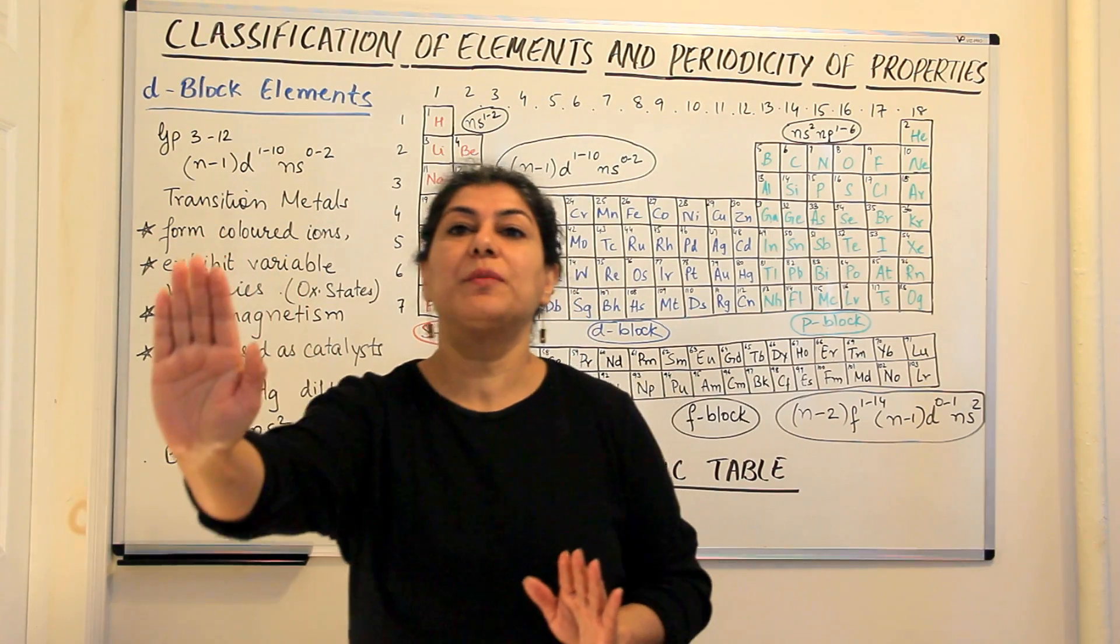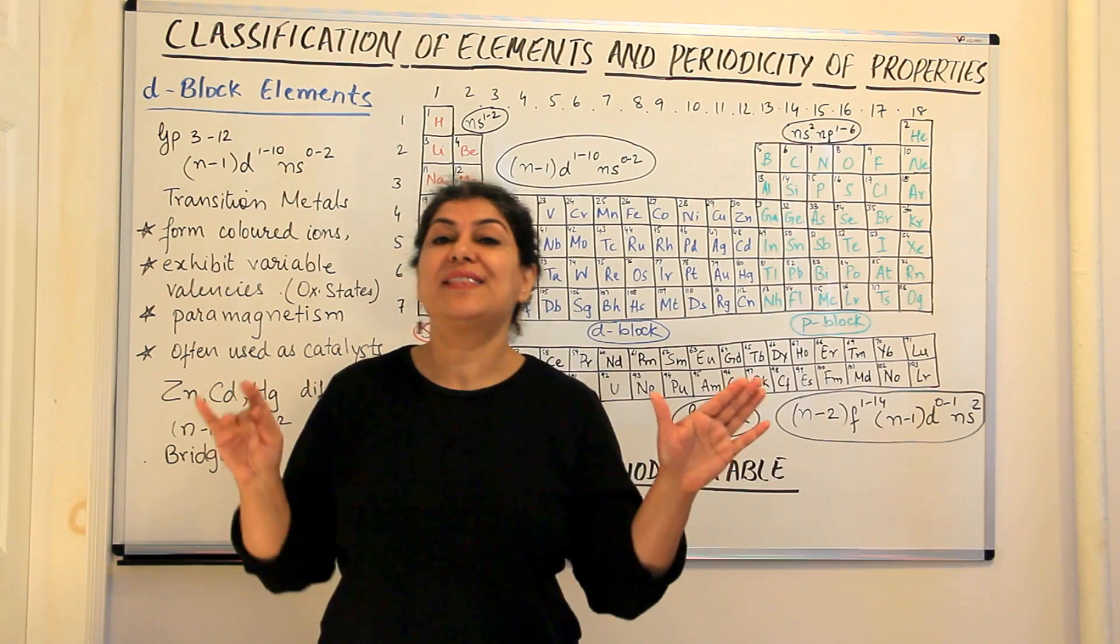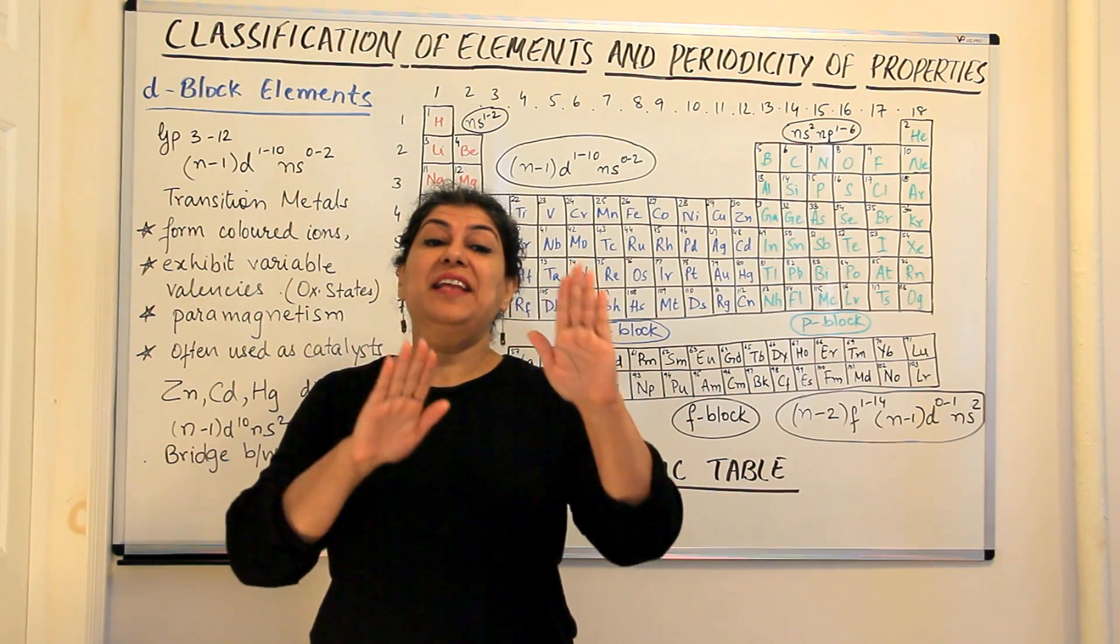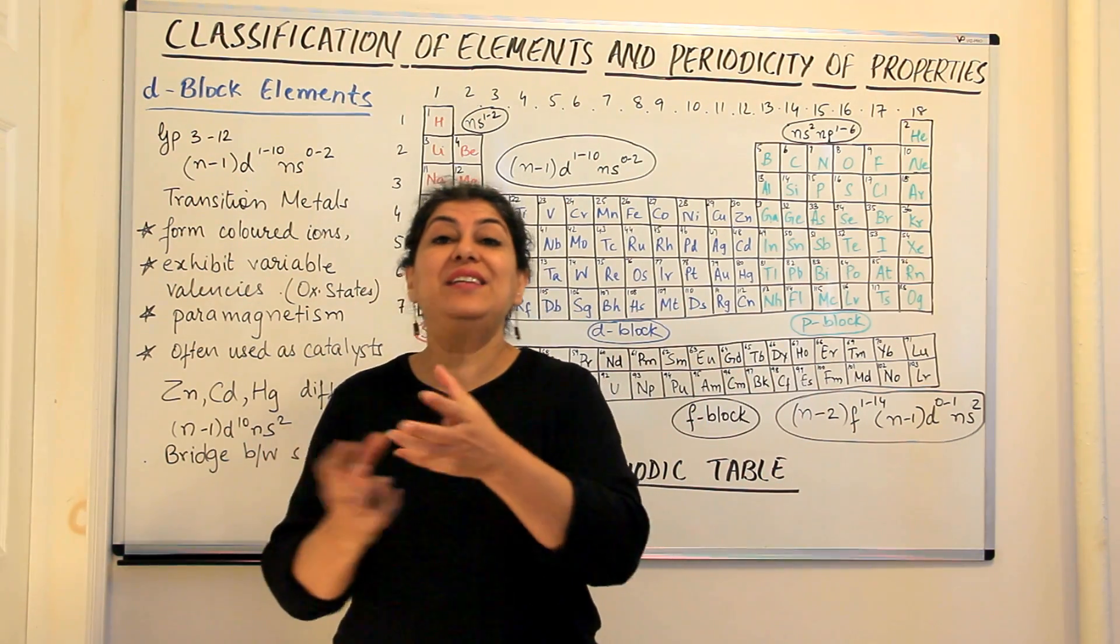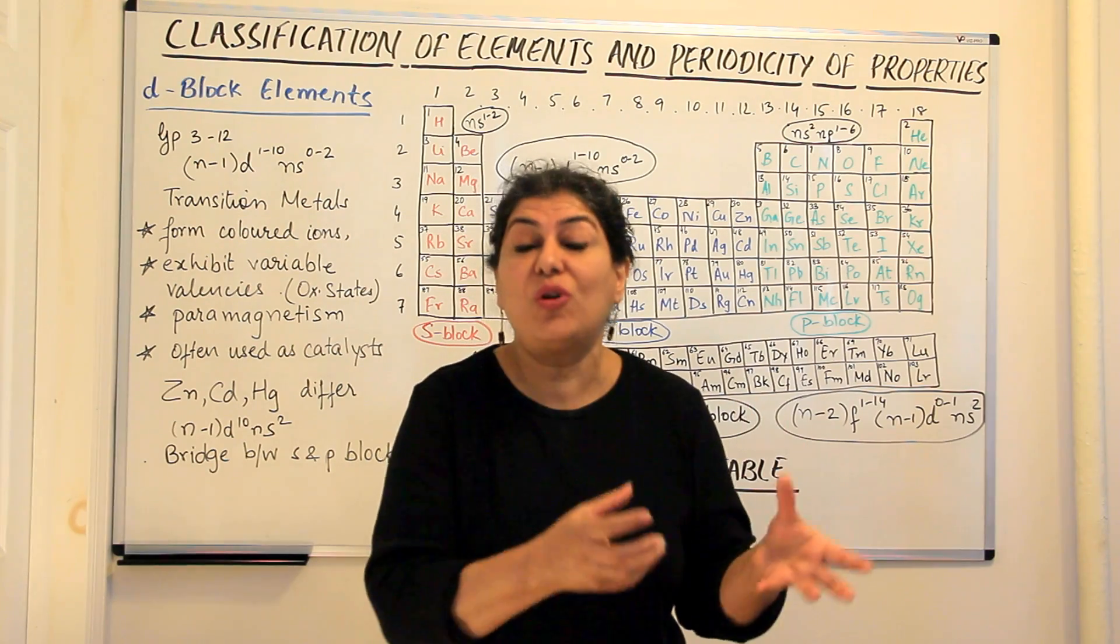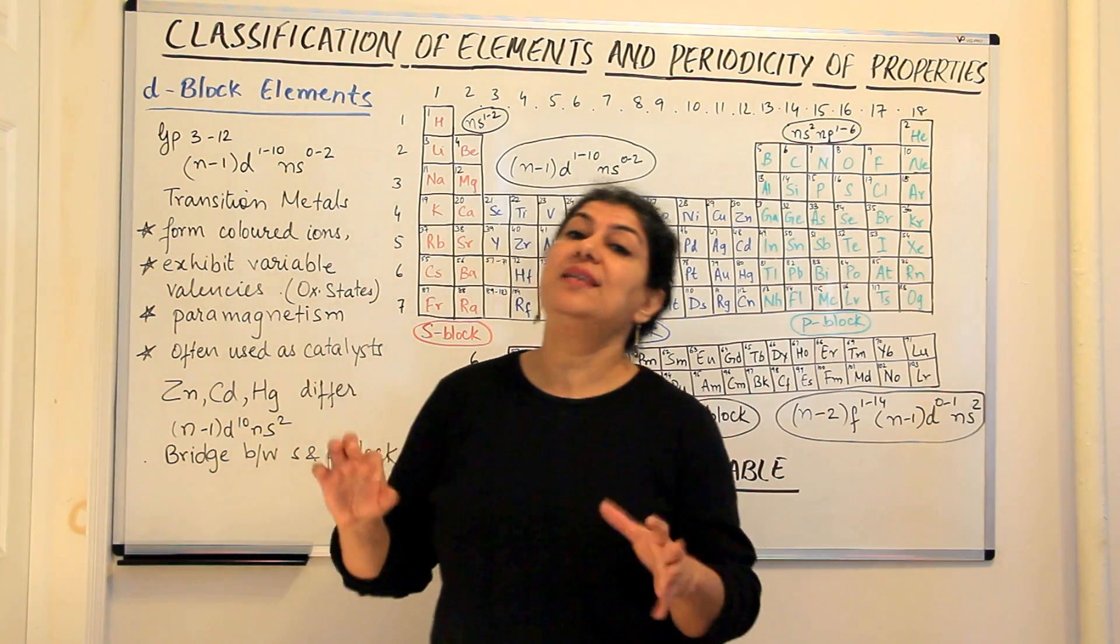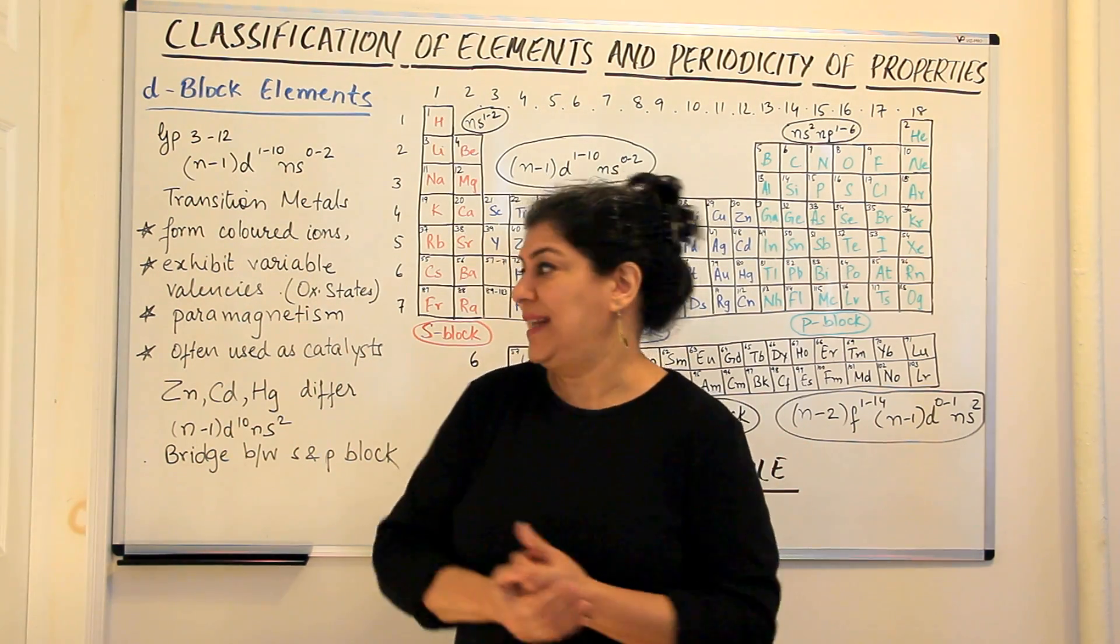These transition metals are found to show different valencies. If they can acquire this much stability, fine. If not, another stability is also good. They try to combine in as many ways as they can since they have those options and they produce more than one valency. They combine in different ways with different numbers of electrons that are involved and that is why they exhibit variable valencies or apparent valencies which are known as oxidation states.